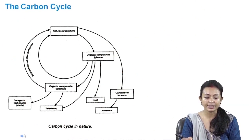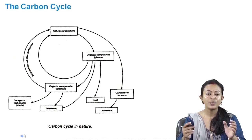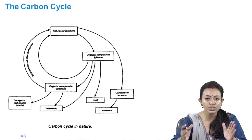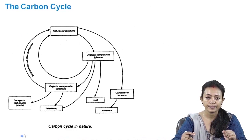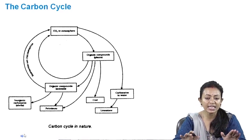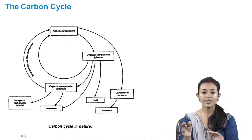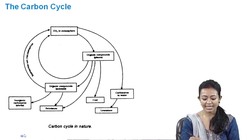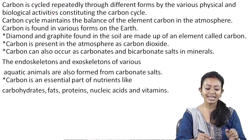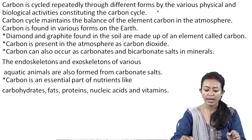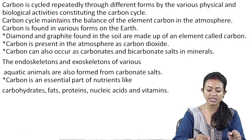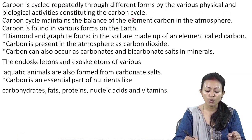The next cycle is the carbon cycle. Carbon is one of the most integral parts of organic life. There is a balance which has been maintained in nature through the carbon cycle, and this balance is because of the photosynthesis carried on by plants and the respiration carried on by organisms. Carbon is cycled repeatedly through different forms by various physical and biological activities constituting the carbon cycle.